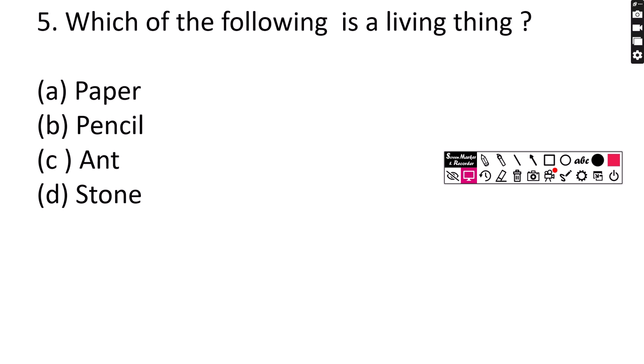Number 5. Which of the following is a living thing? A. Paper, B. Pencil, C. Ant, D. Stone. Correct answer is option C, Ant.